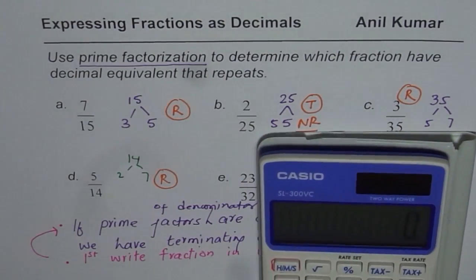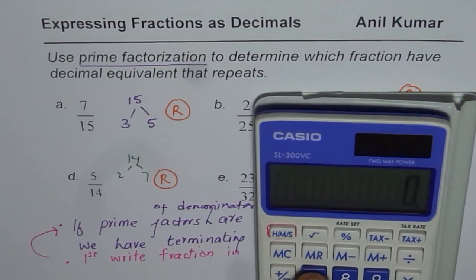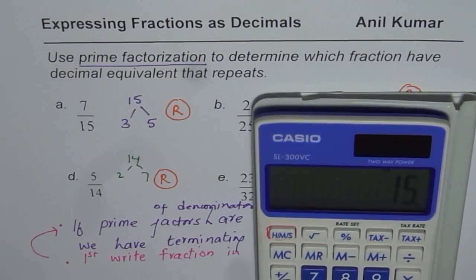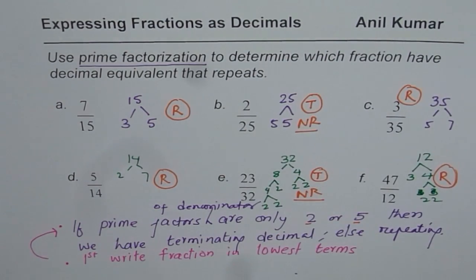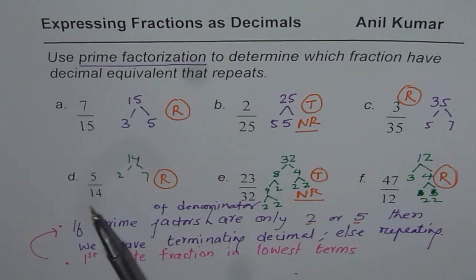Now let us say 7 over 15. 7 divided by 15 gives us 0.4666 repeating. So if you see that a decimal is not terminating it will be repeating.